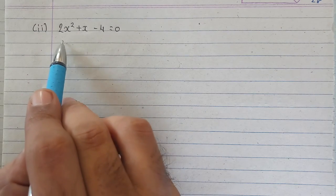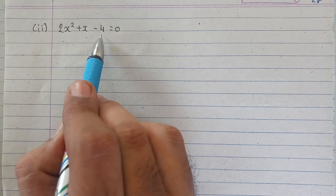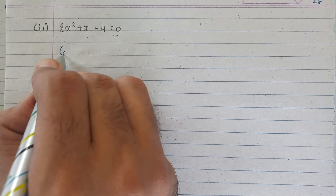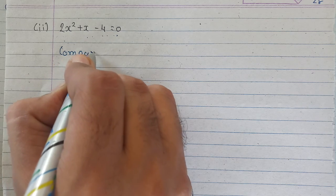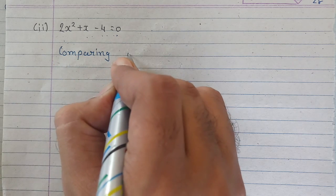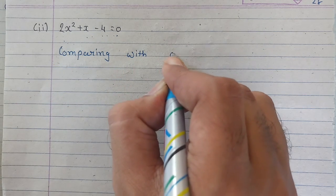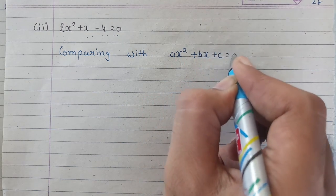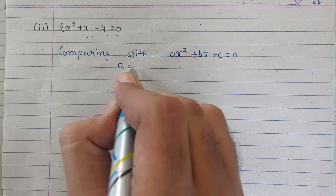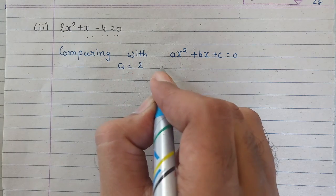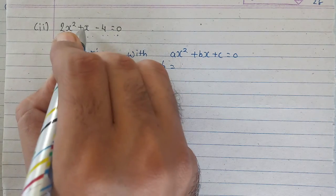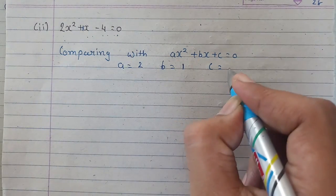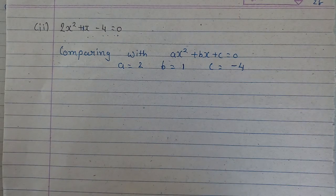Next is sum number second, 2x square plus x minus 4 is equal to 0. First, we will compare them. Comparing with ax square plus bx plus c is equal to 0. So a is 2, b is 1,